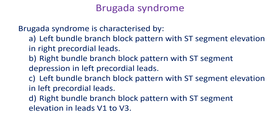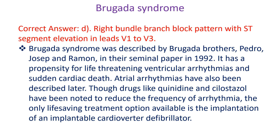Brugada syndrome is characterized by: A. Left bundle branch block pattern with ST segment elevation in right precordial leads. B. Right bundle branch block pattern with ST segment depression in left precordial leads. C. Left bundle branch block pattern with ST segment elevation in left precordial leads. D. Right bundle branch block pattern with ST segment elevation in leads V1 to V3. Correct answer: D. Brugada syndrome was described by the Brugada brothers — Pedro, Joseph and Ramon — in their seminal paper in 1992. It has a propensity for life-threatening ventricular arrhythmias and sudden cardiac death. Atrial arrhythmias have also been described. Though drugs like quinidine have been noted to reduce the frequency of arrhythmia, the only life-saving treatment option available is the implantation of an implantable defibrillator.